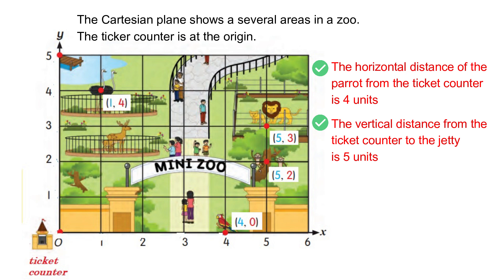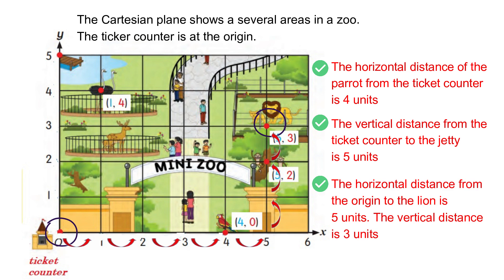Now, the horizontal distance from the origin to the lion. From the origin to the lion, we have to move five units to the right and three units up. So the horizontal distance will be five units and the vertical distance will be three units.